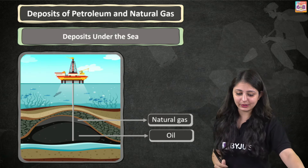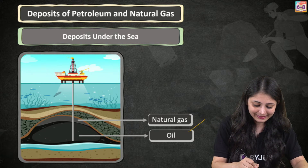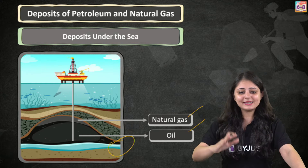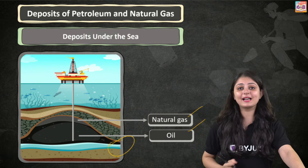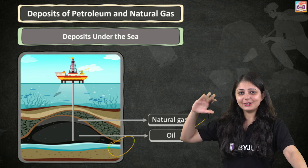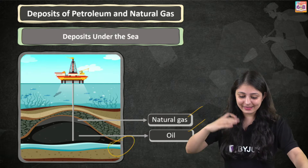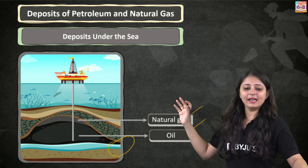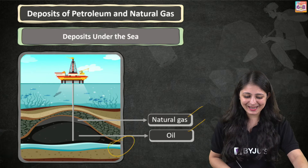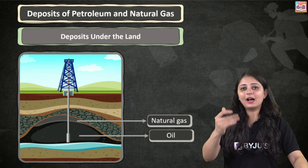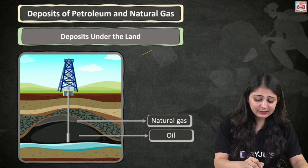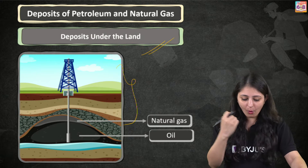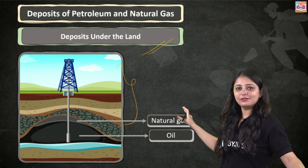If you look closely, you'll notice that the layer containing oil and gas is actually above that of water. Why is this so? Natural gas and oil do not mix with water, plus they are lighter — and that's why the layer is above that of water. We need to remember this logic for the labeling. Petroleum reservoirs can be found beneath land or on the ocean floor.